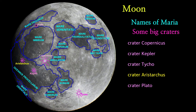Crater Aristarchus. Aristarchus is a lunar impact crater that lies in the northwest part of the Moon's near side. The crater is named after the Greek astronomer Aristarchus of Samos. He was an ancient Greek astronomer and mathematician who presented the first known heliocentric model, placing the Sun at the center of the known universe, with the Earth revolving around the Sun once a year and rotating about its axis once a day. This crater is bright enough to be visible to the naked eye.